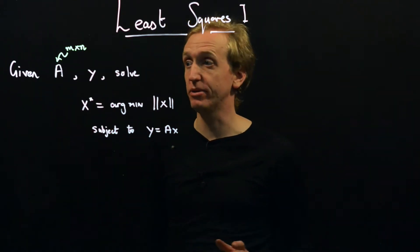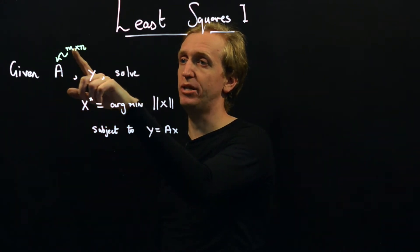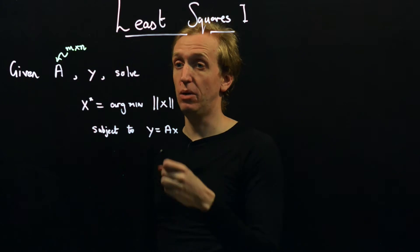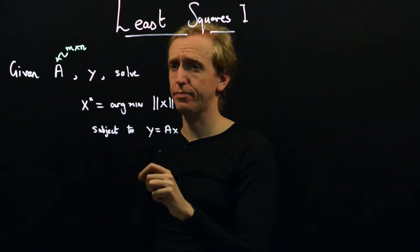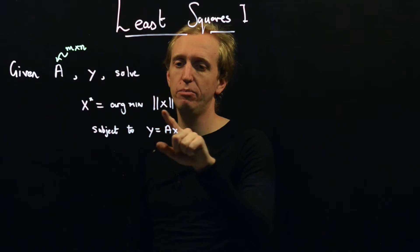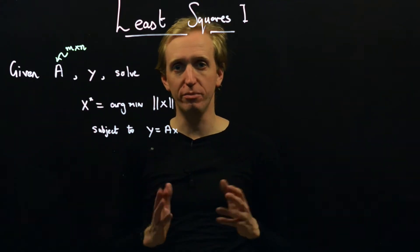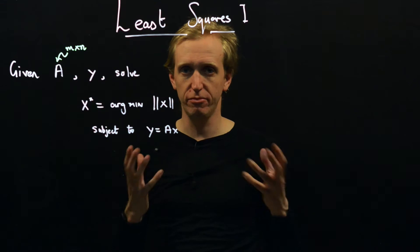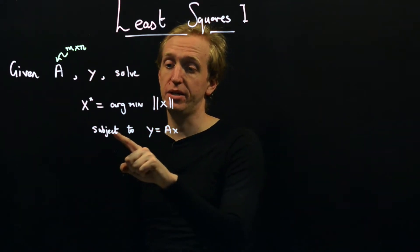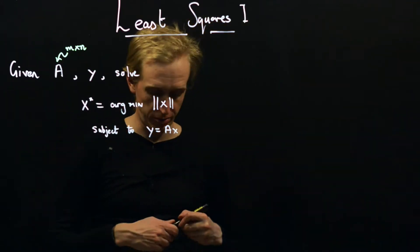So we're given a matrix of dimensions m by n, and some vector y which has m entries, and we're asked to solve this problem. We want to find the minimum norm — the two lines here are notation for norm, which is a way to formalize the concept of the size of a vector. So we want to minimize the size of the vector x such that y is equal to Ax.